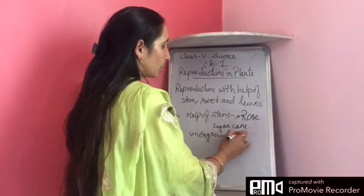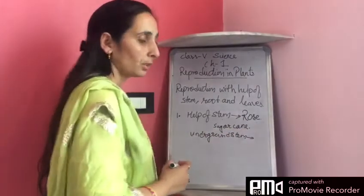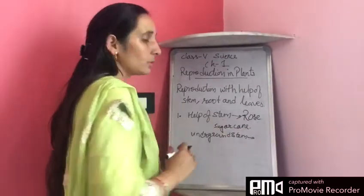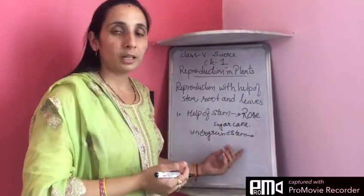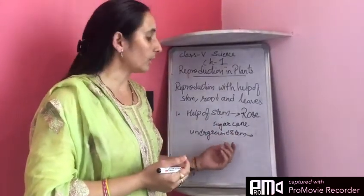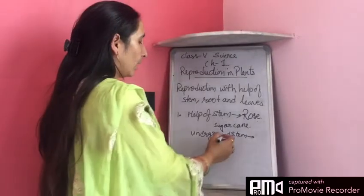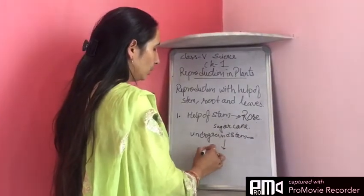Underground stems can also be used to produce new plants. Underground stems generally store food material and they can develop into a new plant. An example of an underground stem is that of potato.